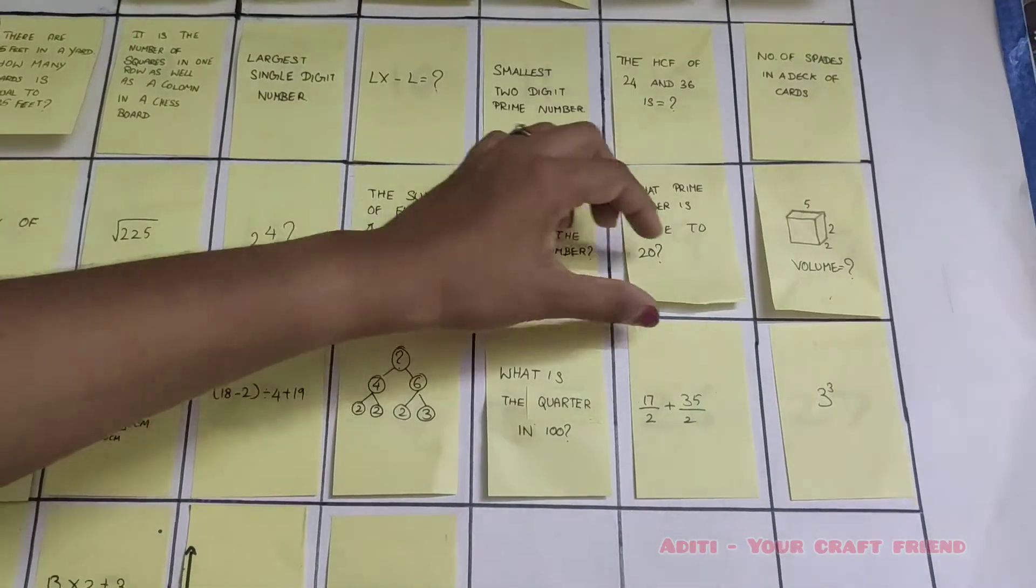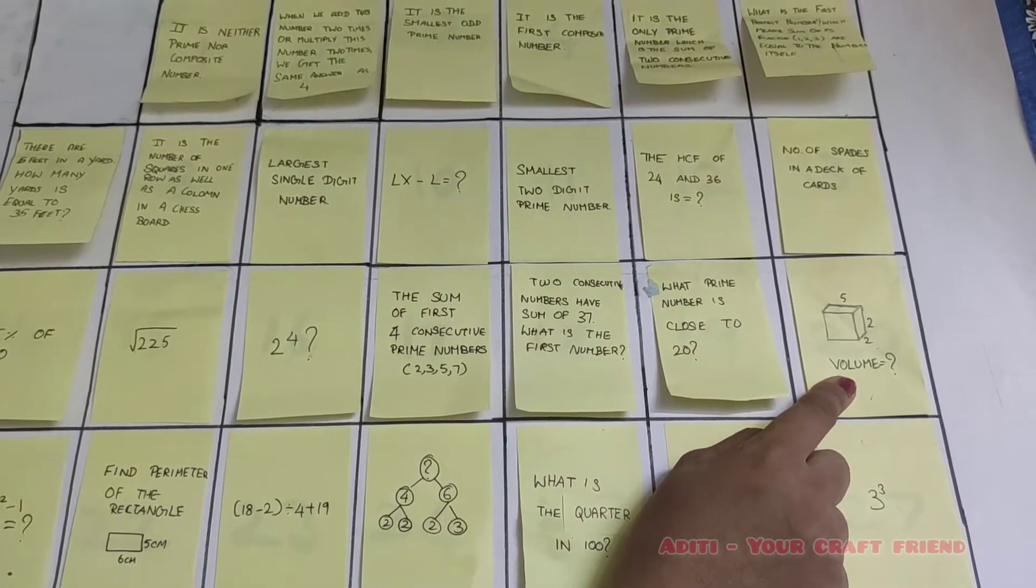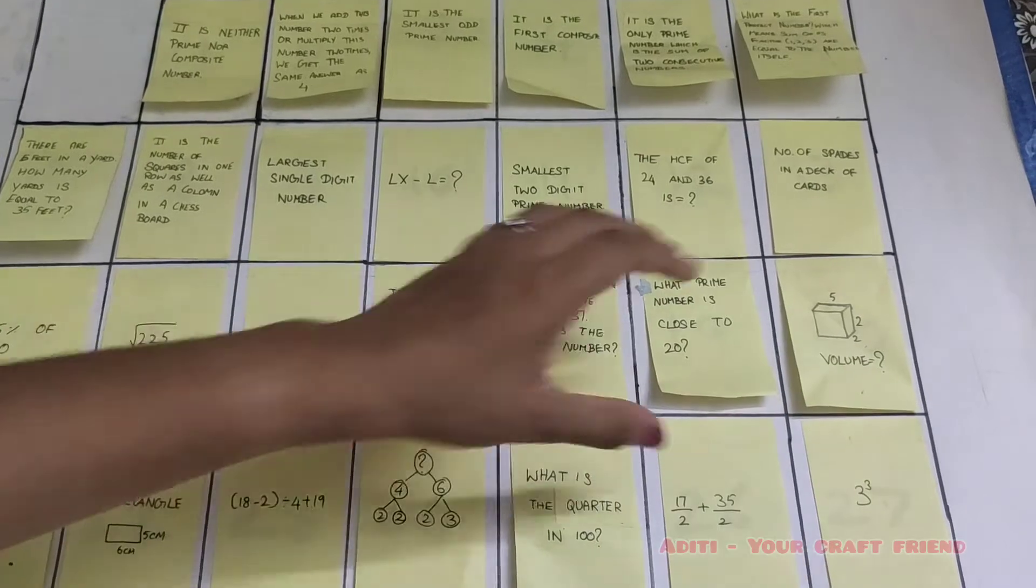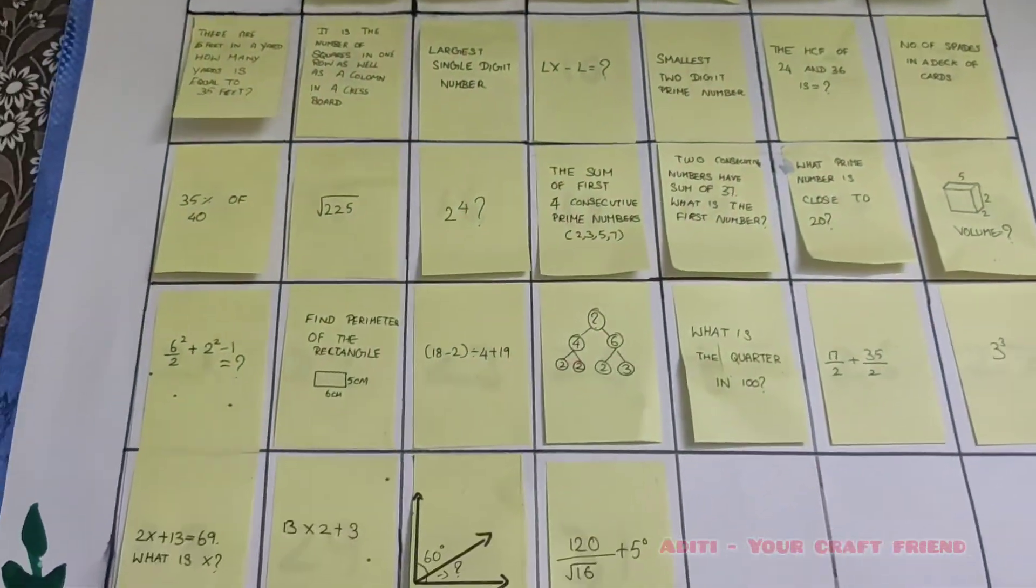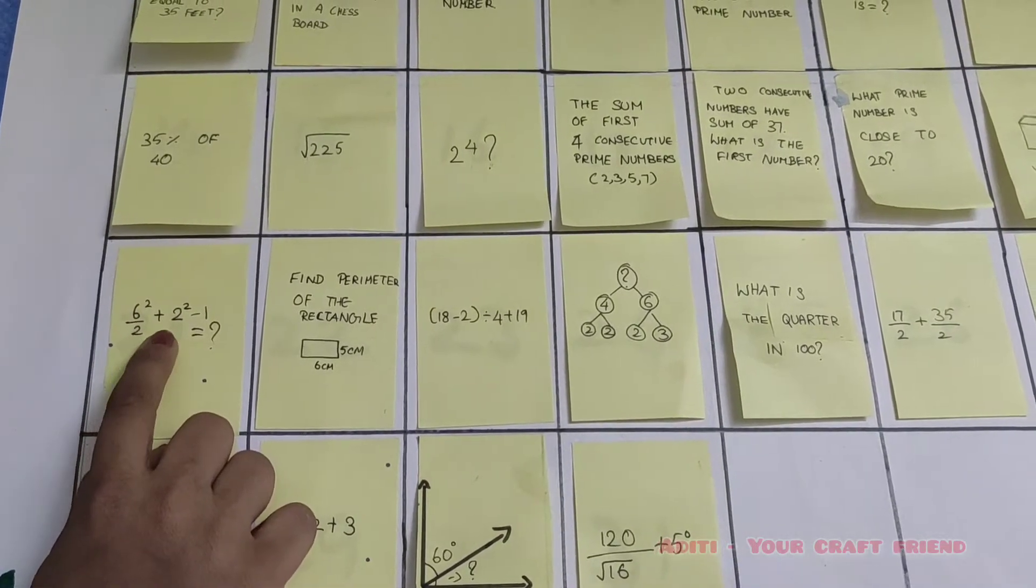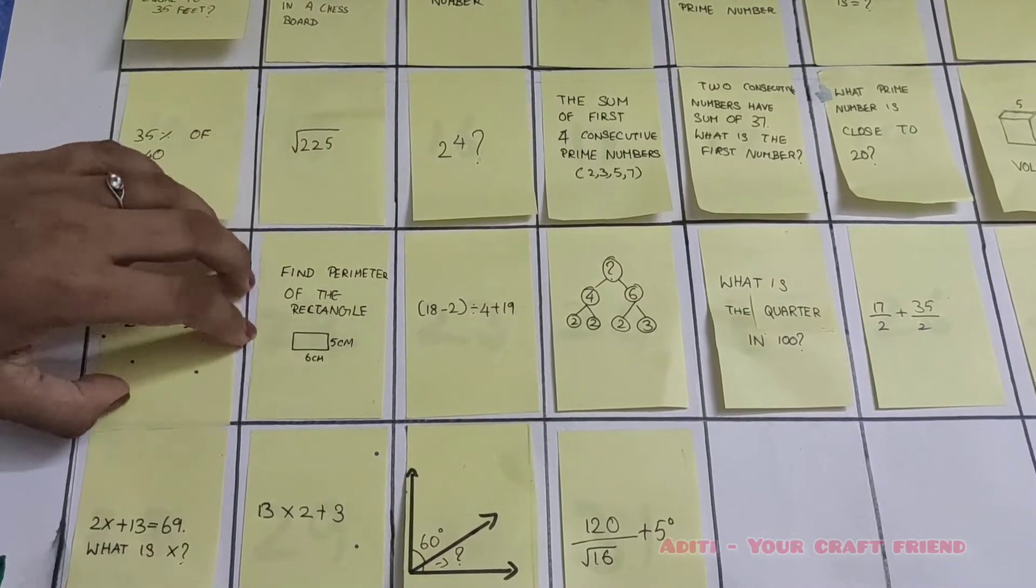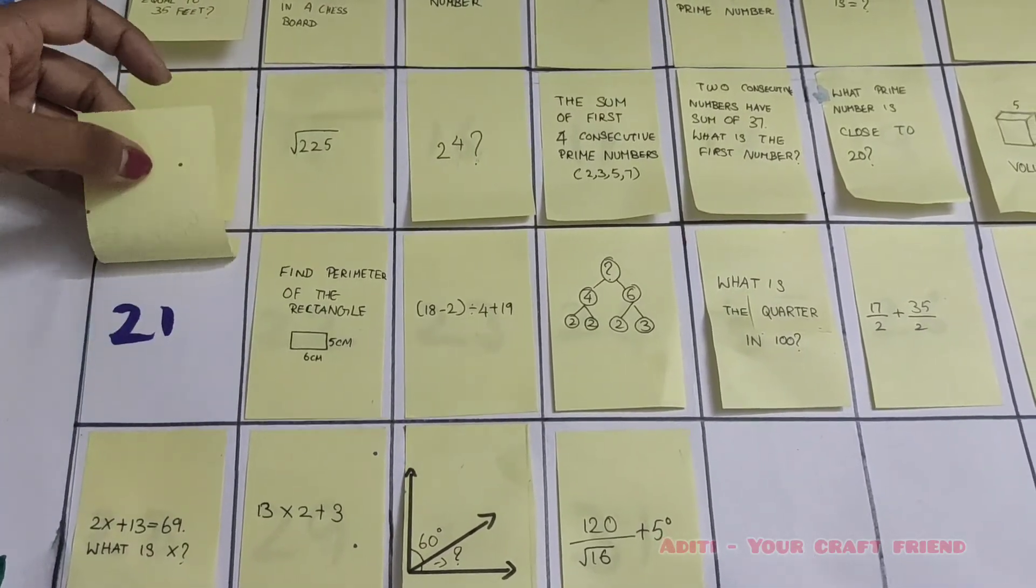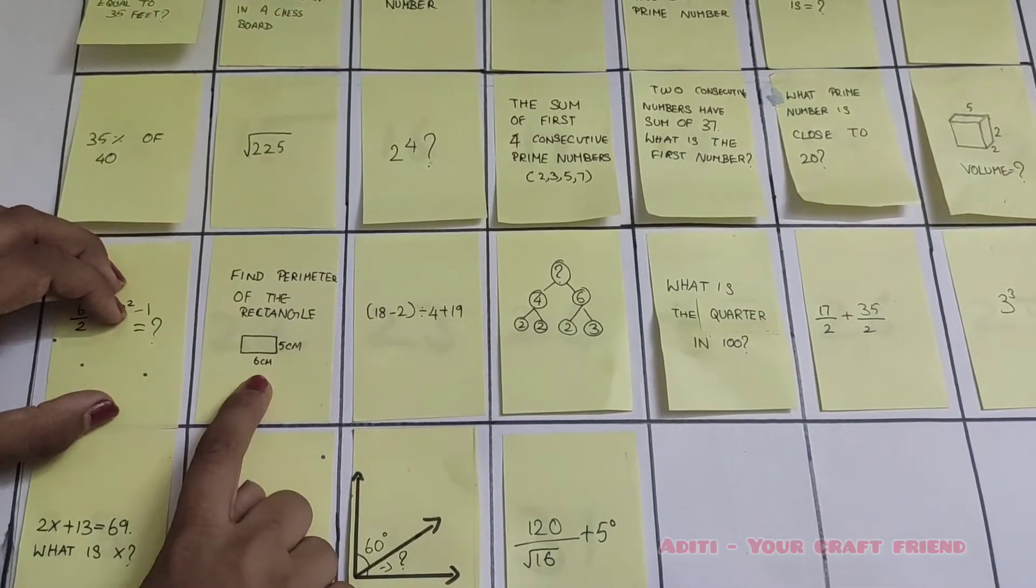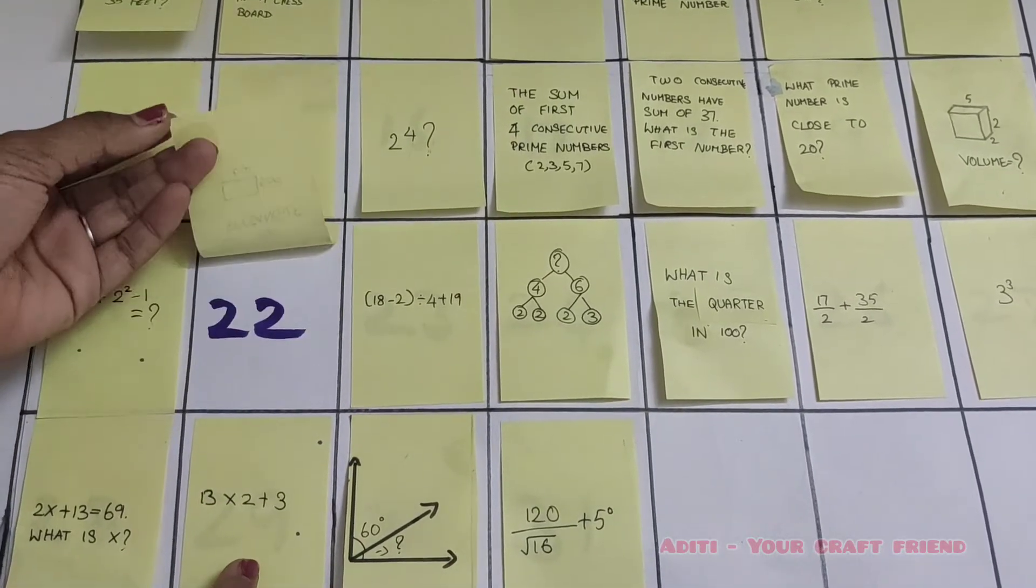What prime number is close to 20? It's 19, so easy. What is the volume of this cube board? That is 5 × 2 is equal to 10, 10 × 2 is equal to 20. Find the perimeter of the rectangle. That is 6 × 5 is equal to 11, 11 × 2 is equal to 22.